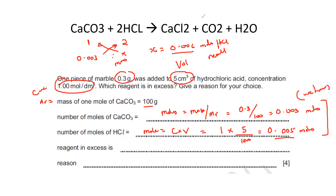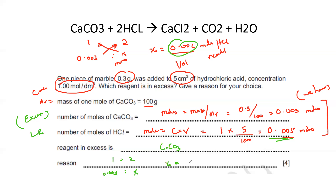Since we need 0.006 moles of HCl but only have 0.005, HCl is the limiting reagent. This means calcium carbonate is in excess. The reason: using the ratio 1 : 2, if we have 0.003 moles of CaCO₃, then 0.006 moles of HCl are needed — but we don't have enough. So HCl is limiting and calcium carbonate is the excess reagent.